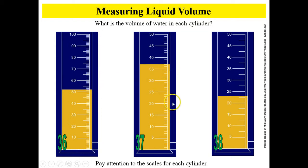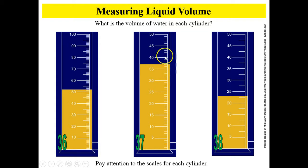When you look at number 37, notice the scale is different. This is 30 milliliters, this is 35 milliliters, and this is 40. If this is 35 and there are 5 lines to get to 40, that means each line is also worth 1. Record the volume of the liquid for number 37.